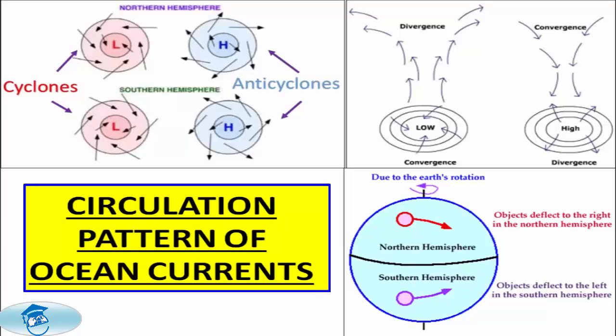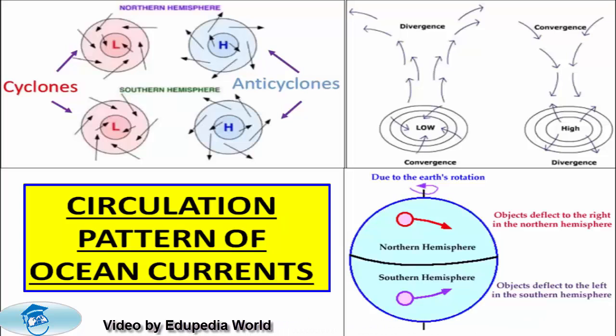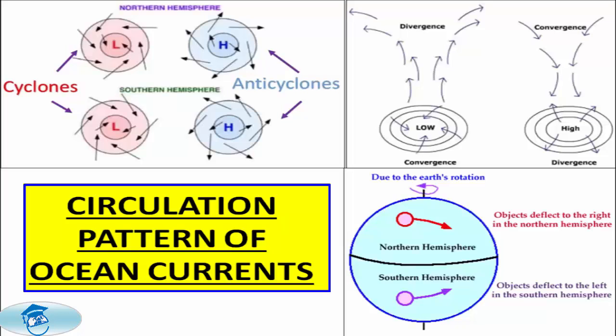Due to the Coriolis force, warm currents flow from low latitudes and move to the right in the Northern Hemisphere and to the left in the Southern Hemisphere. The cold waters of the Arctic and Antarctic circles move towards warmer waters in tropical and equatorial regions, while the warm waters of the lower latitudes move polewards.